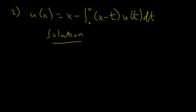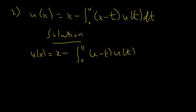We have u(x) equal to x minus the integral from zero to x of (x minus t) u(t) dt. We can easily see that this is of the second kind Volterra integral equation, which is non-homogeneous because we have this free term present.